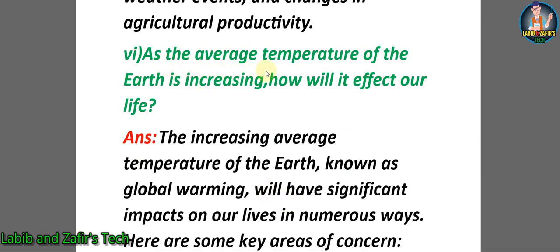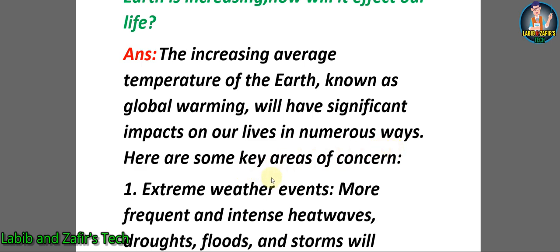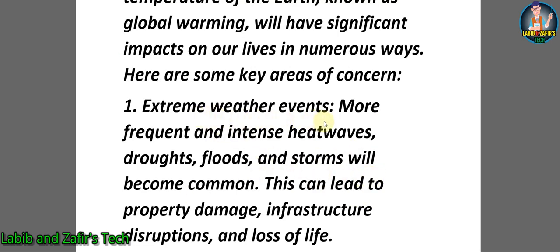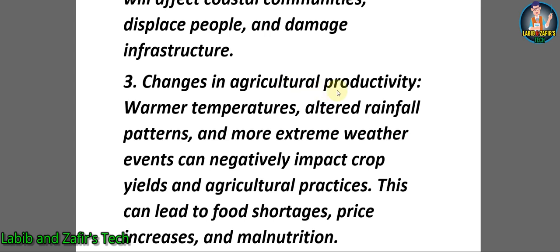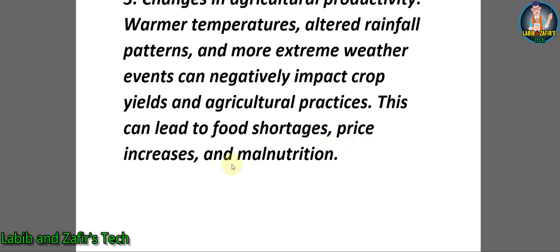Number six: as the average temperature of the Earth is increasing, how will it affect our lives? Answer: the increasing average temperature of the Earth, known as global warming, will have significant impacts on our lives. Number one: extreme weather events — more frequent and intense heat waves, droughts, floods, and storms will become common, leading to property damage, infrastructure disruptions, and loss of life. Number two: rising sea levels — as glaciers and ice caps melt, sea levels will rise, leading to coastal erosion, flooding, saltwater intrusion, displacing people and damaging infrastructure. Number three: changes in agricultural productivity — warmer temperatures, altered rainfall patterns, and more extreme weather events can negatively impact crop yields and agricultural practices, leading to food shortages, price increases, and malnutrition.